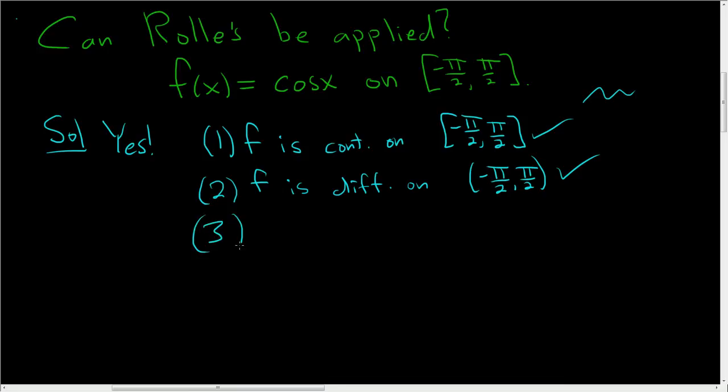And three, we have to check if the endpoints are the same. We have to check that f of negative pi over 2 is equal to f of pi over 2. Well, f of negative pi over 2, that's the cosine of negative pi over 2. And f of pi over 2, that's the cosine of pi over 2.